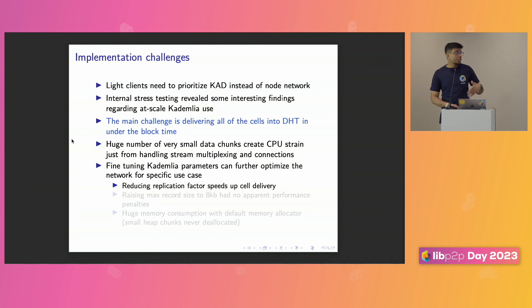So we saw that reducing the replication factor speeds up cell delivery, which seems natural right now, but it was not that obvious when we started. Also, raising the maximum record size to something like 8 KB had no performance penalties. So we can have bigger sizes of payloads. And then the default memory allocator never deallocated. And these kind of things increase the memory consumption.